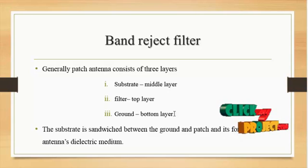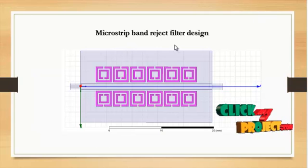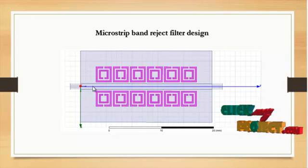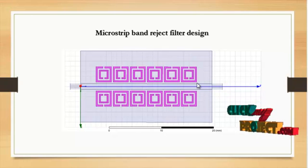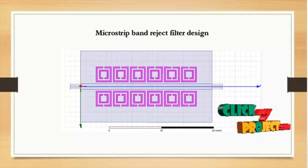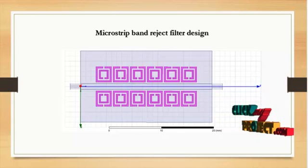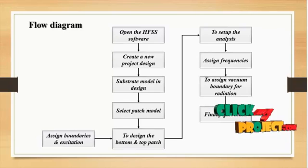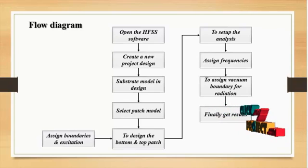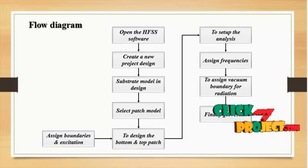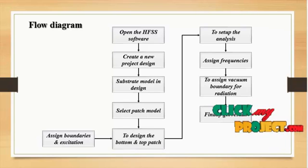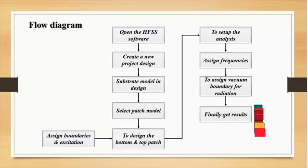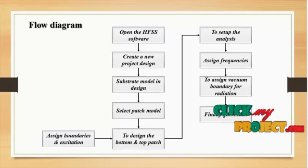The substrate is sandwiched between the ground and the patch, forming a patch antenna dielectric medium. This is the microstrip band reject filter design in HFSS software, using six SRR resonators. The results calculated using SRR include return loss, radiation pattern, and related values. Boundaries are set using perfect electric conductors, with the electric field assumed by the patch and ground planes. Excitation is applied using wave port analysis for S11 and S21 parameters.